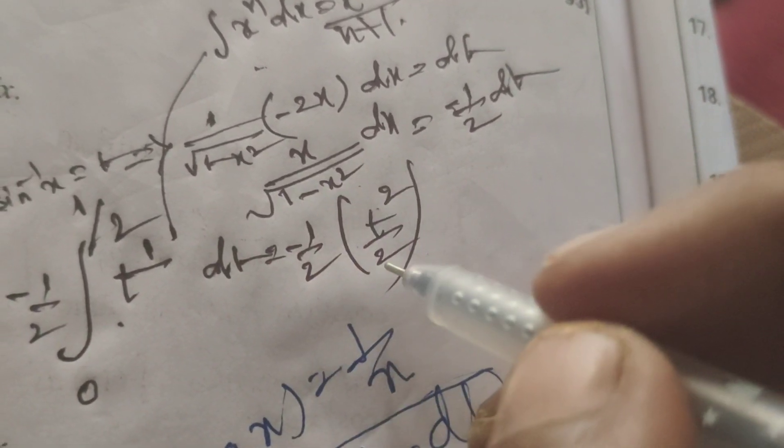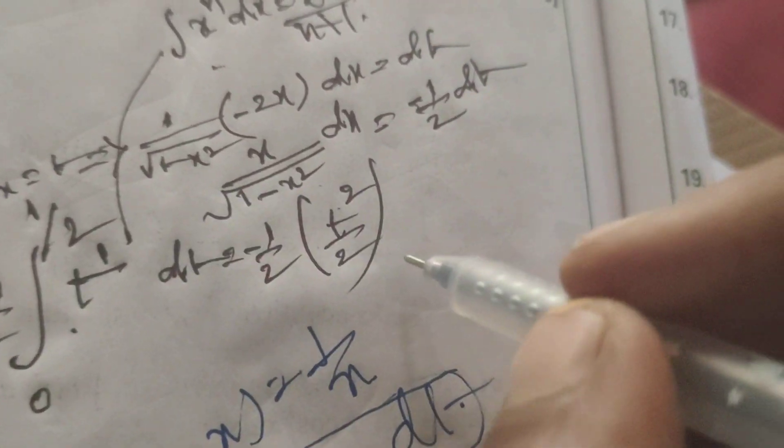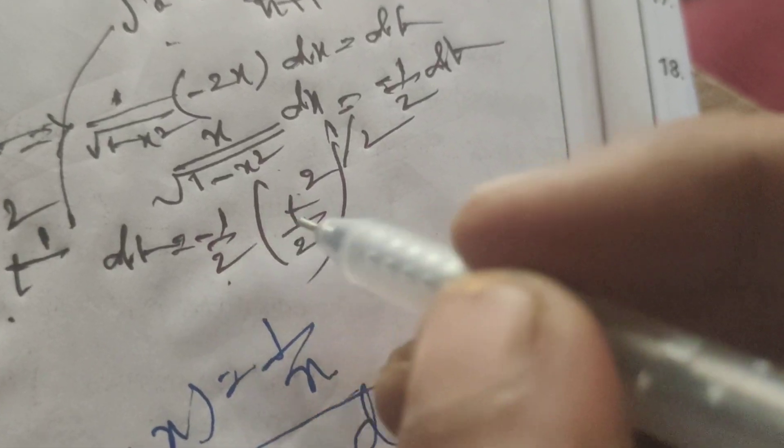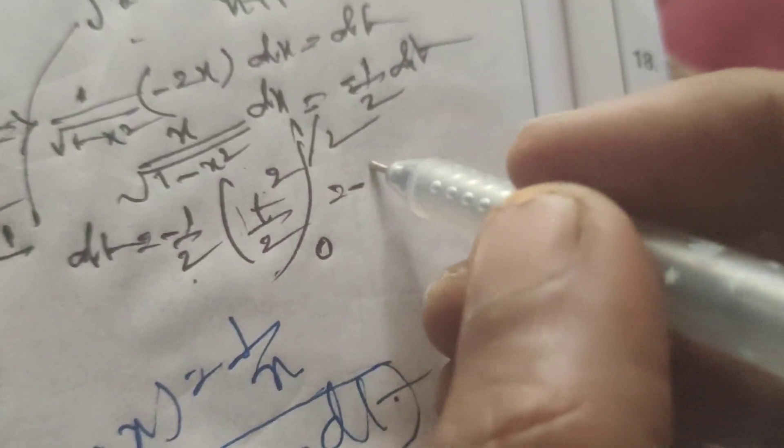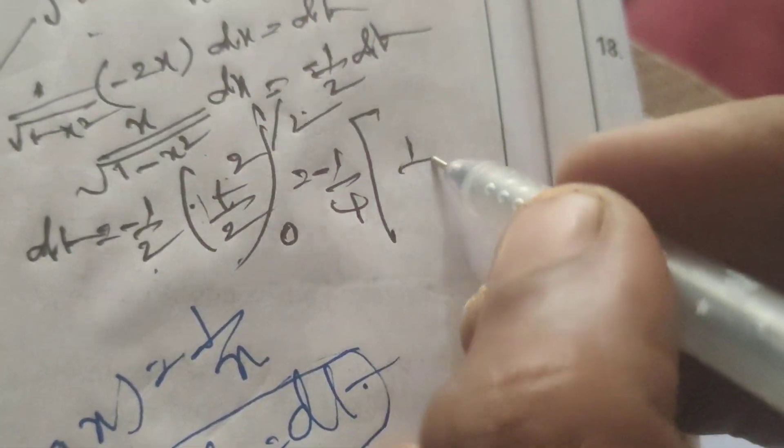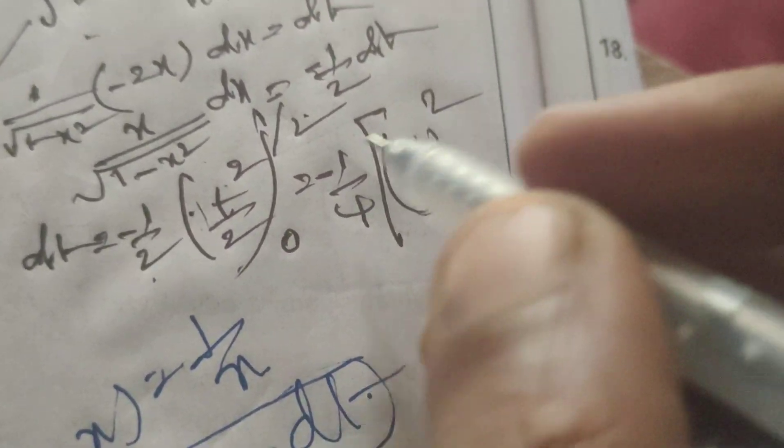After that integration, substitute the limits 0 to 1/2. Here, minus 1 by 2 into 1 by 2, which is minus 1 by 4. In place of t, first substitute the upper limit 1/2 whole square, minus the lower limit 0 square.